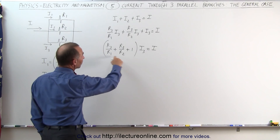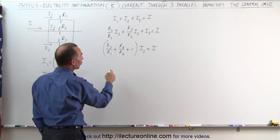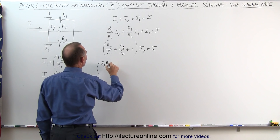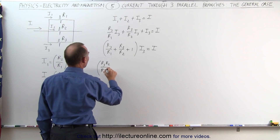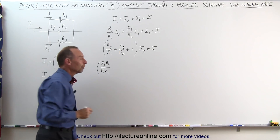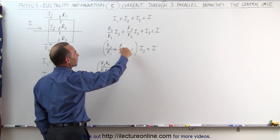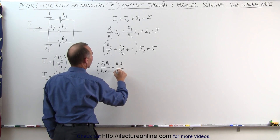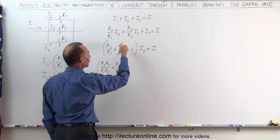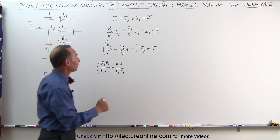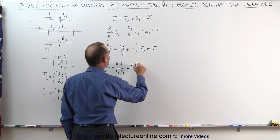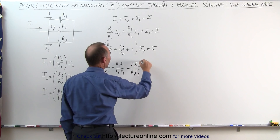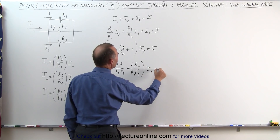Now we combine these three fractions. We need the common denominator, which is R1 times R2. So R3 over R1 becomes R3 times R2 divided by R1 times R2, multiplying numerator and denominator by R2. Similarly, R3 over R2 becomes R3 times R1 over R2 times R1, multiplying by R1. And the 1 can be written as R1 times R2 divided by R1 times R2. Multiplying all this times I3 equals I.